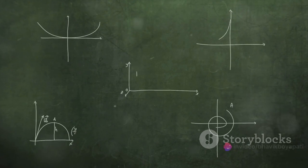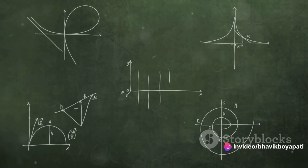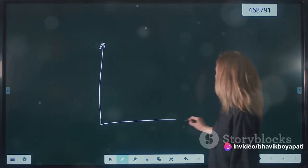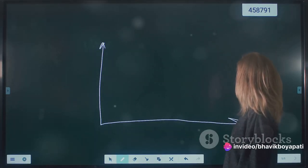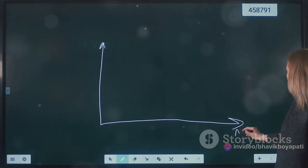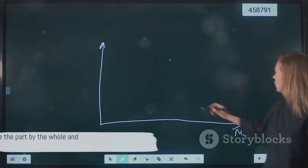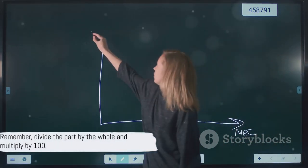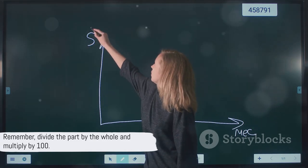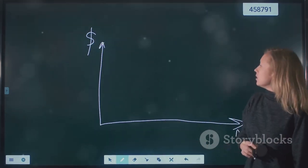So the next time you see a number and wonder how it would look as a percentage, just remember these steps: divide the part by the whole, then multiply the result by 100. To find the percentage, you divide the part by the whole and then multiply by 100.